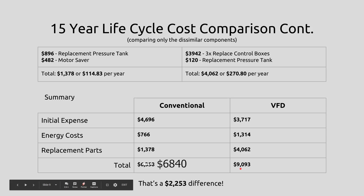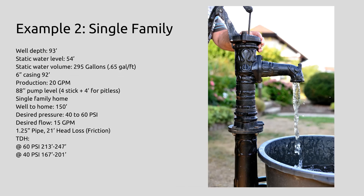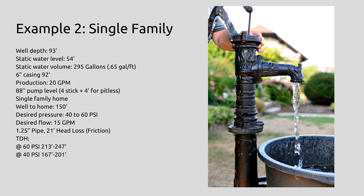So when we factor in total energy cost, replacement parts, and initial expense, the conventional system does come out to be quite a bit cheaper in this situation, whereas the VFD is quite a bit more money. There are definitely pros and cons. When you're making those decisions, if you want constant pressure you've got a reason. But in this case, the conventional system just makes more sense. We did another comparison — I'm not going to take as much time walking through every piece of it, so I'll just quickly run through the screens. Feel free to pause the video if you want to spend more time on them.